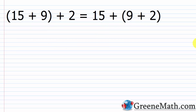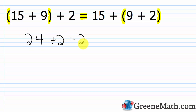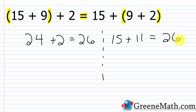As our last example: (fifteen plus nine) plus two equals fifteen plus (nine plus two). On the left, fifteen plus nine is twenty-four, and twenty-four plus two gives twenty-six. On the right, nine plus two is eleven, and fifteen plus eleven also gives twenty-six. The same three numbers — fifteen, nine, and two — give twenty-six no matter how we group the addition.